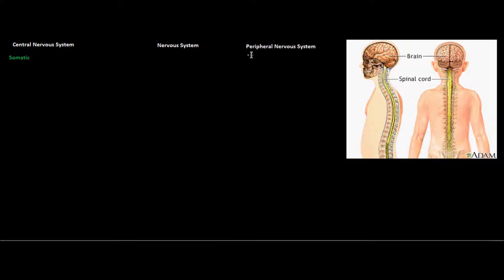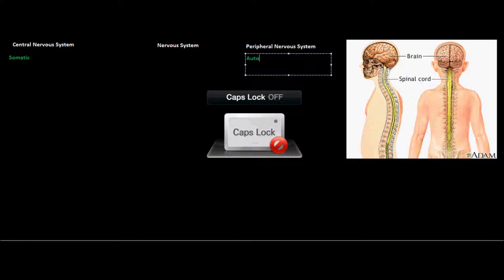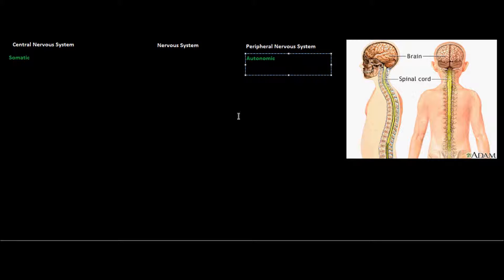But before going that deep and before really understanding those things, it's important to start at the basics. And this is where the nervous system comes in. You really have to understand how the nervous system is composed of the central nervous system and the peripheral nervous system, and to understand the two different divisions in deep detail.